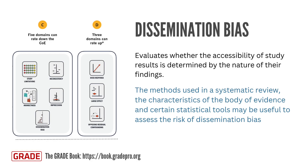Dissemination bias: This domain evaluates whether the accessibility of study results is determined by the nature of their findings. Although there are considerable challenges in judging the presence or absence of dissemination bias, the methods used in a systematic review, the characteristics of the body of evidence, and certain statistical tools may be useful when judging its influence on the certainty of the evidence.